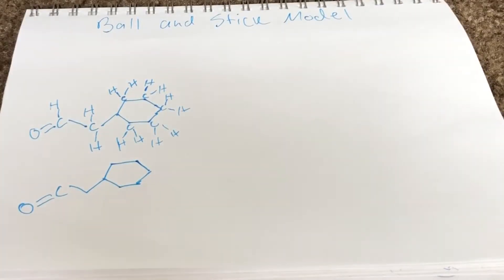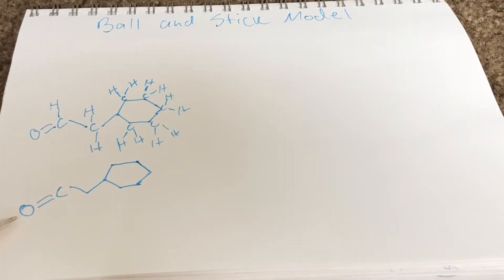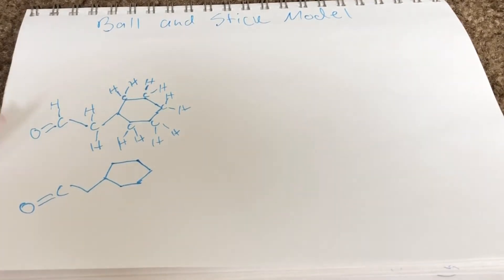Hello everyone! Today we'll be talking about how to read a molecule using the ball-and-stick model on paper. Here I have drawn two of the same molecules. This molecule right here is the exact same as this one, but shown as it is typically represented in a ball-and-stick model. So why does this one look more filled than this one? I'll explain.